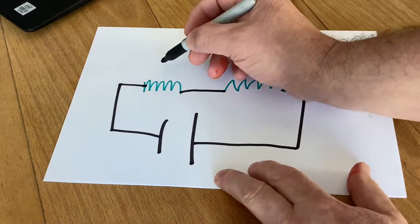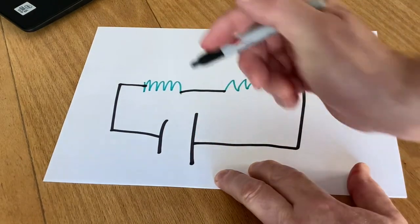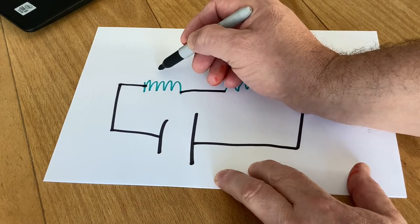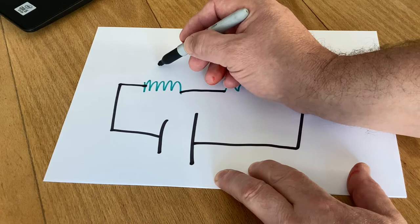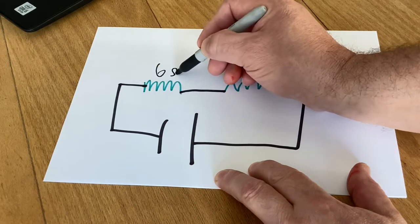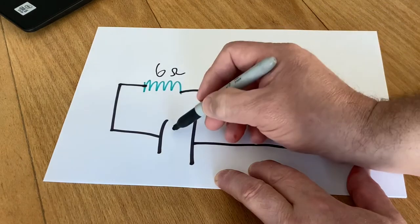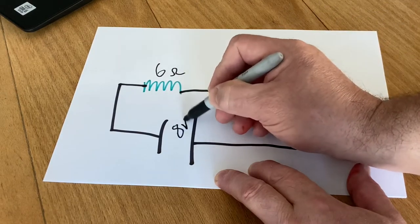It gives us the values of the resistances. Now I'm going to change the values. I'm going to say that this one is a 6 ohm and this one is a 4 ohm resistor, and I'm going to have an 8 volt cell.